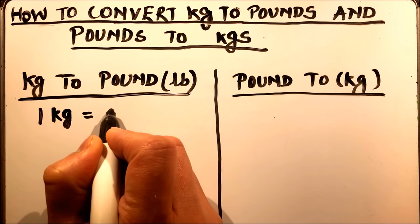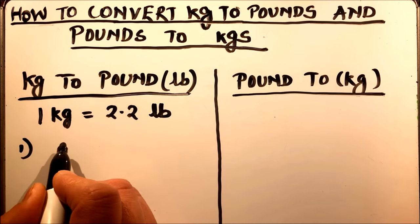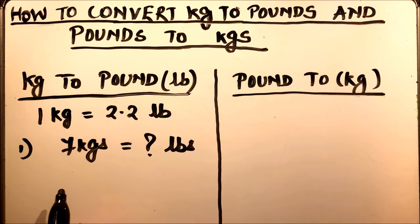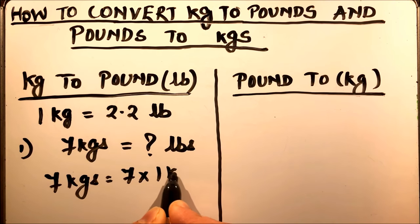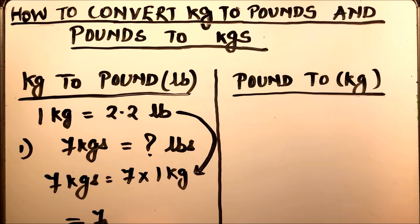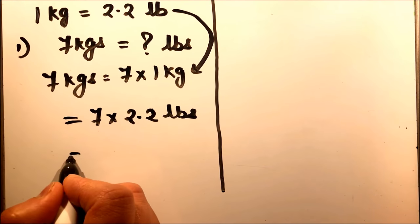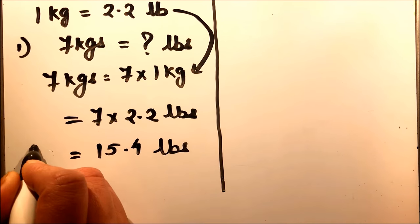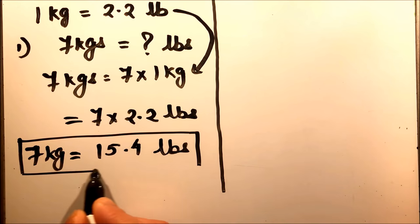1 kilogram is equal to 2.2 pounds. So if you have a question to convert 7 kilograms to how many pounds, you can write it as 7 kilograms equals 7 times 1 kilogram. In place of 1 kilogram, we write it in terms of pounds: 7 times 2.2 pounds, which is equal to 15.4 pounds. So 7 kilograms is equal to 15.4 pounds.